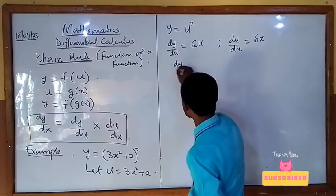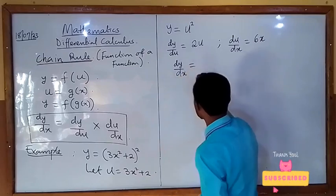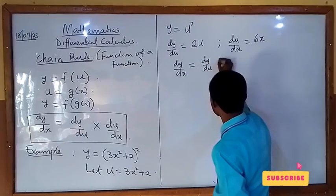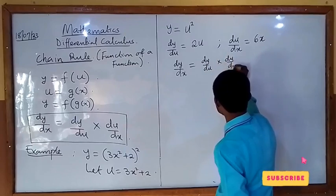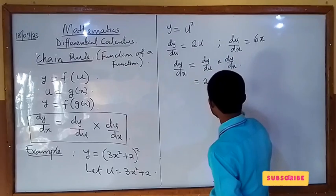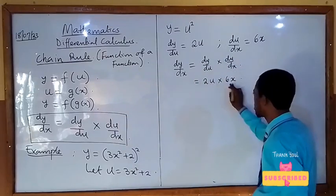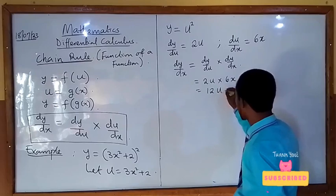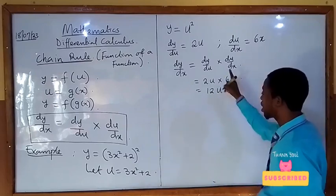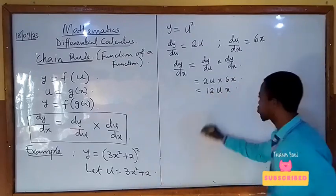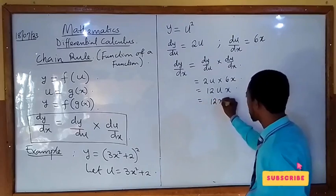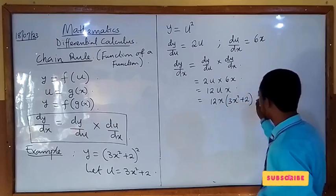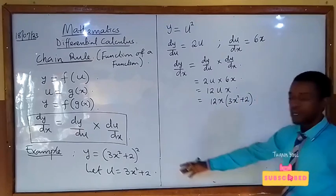Therefore, dy/dx, the differential coefficient we are finding, is dy/du times du/dx. We have 2u times 6x, which gives us 12ux. What is our u? Substitute u back: u is 3x² + 2. So we have 12x times (3x² + 2). This is the derivative of y with respect to x, and that is how to differentiate using the chain rule.